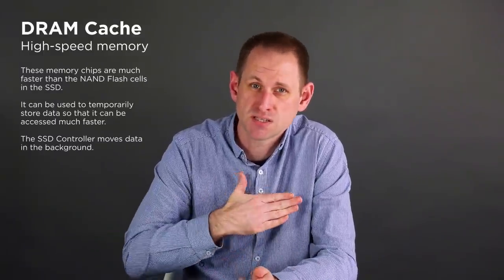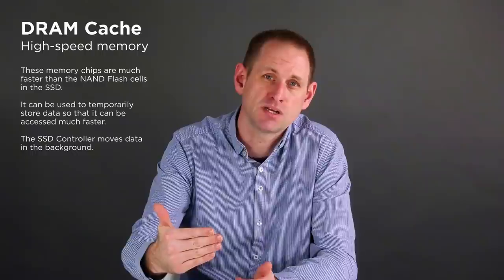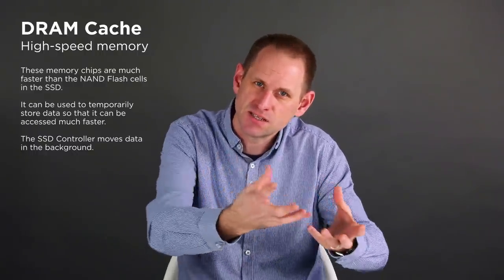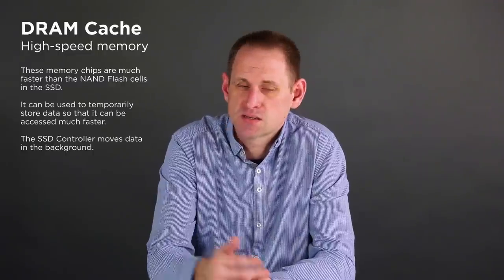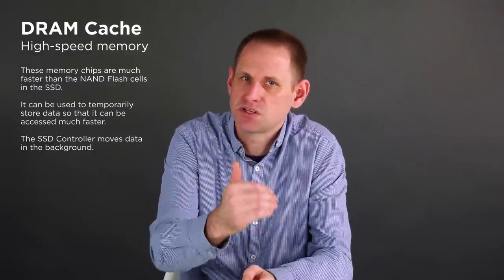First of all, the slower performance of the more dense cell types like TLC can be overcome by implementing memory cache. This is known as DRAM cache memory. Data can be written to this memory very quickly. And then in the background, the SSD can flush it out to the NAND cells. Likewise, frequently accessed data can be temporarily cached to speed up read performance.